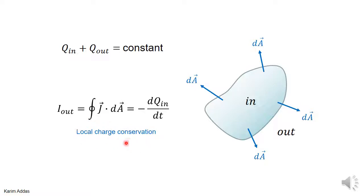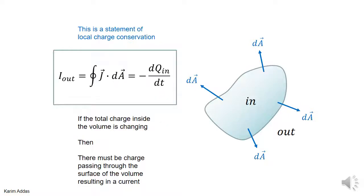This is an expression of local charge conservation: if the charge inside this volume is changing, then there must be some current going through the surface. The only way that charge inside and outside can change is if charges are flowing through the surface. This equation relates the current to the rate of change of charge inside the volume. The summary is: if the total charge inside the volume is changing, there must be charge passing through the surface, resulting in a current.